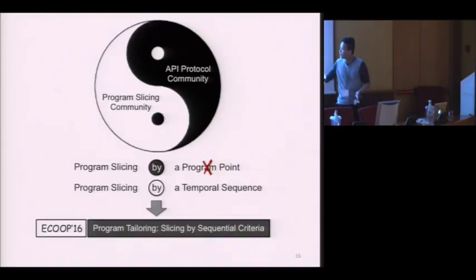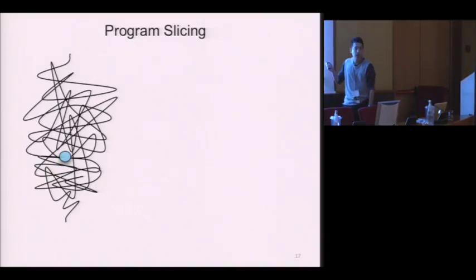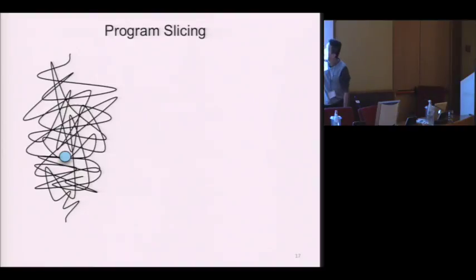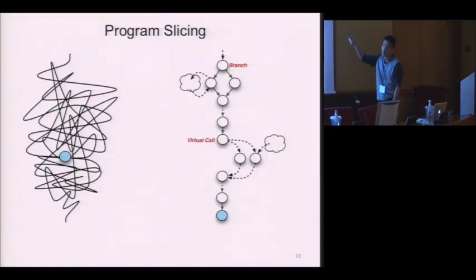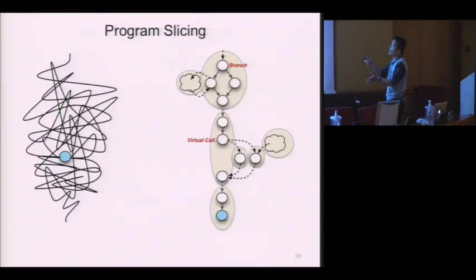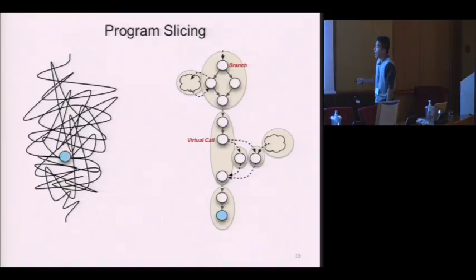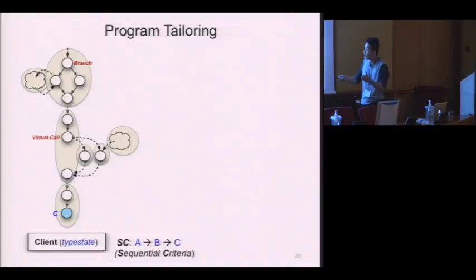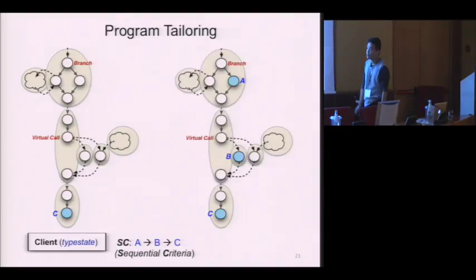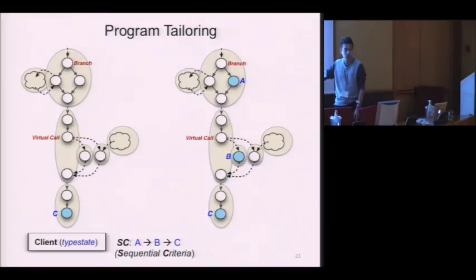The next question would be: why do we need program tailoring? Let's use a simple program debugging task as an example. Assume this is a control flow graph of some program. An error statement at a single program point is reported by some client. After program slicing, we get a sliced program which seems more manageable than the original one. However, if the statements in the sliced program are distributed in different methods or even different classes, it is still hard for users to debug.